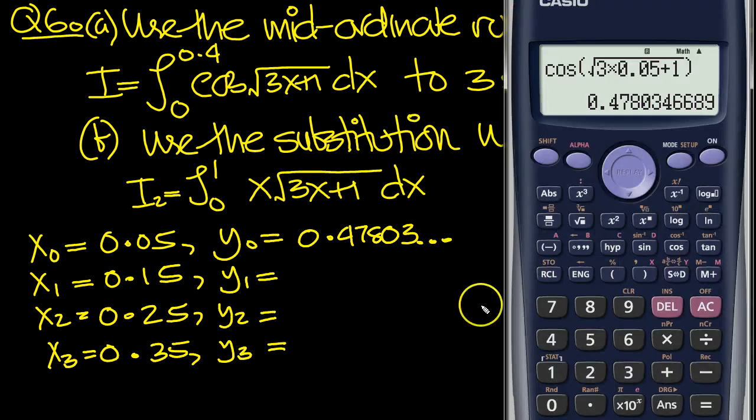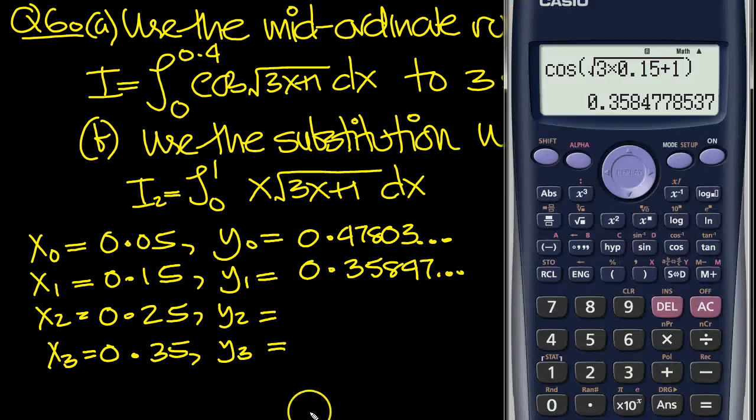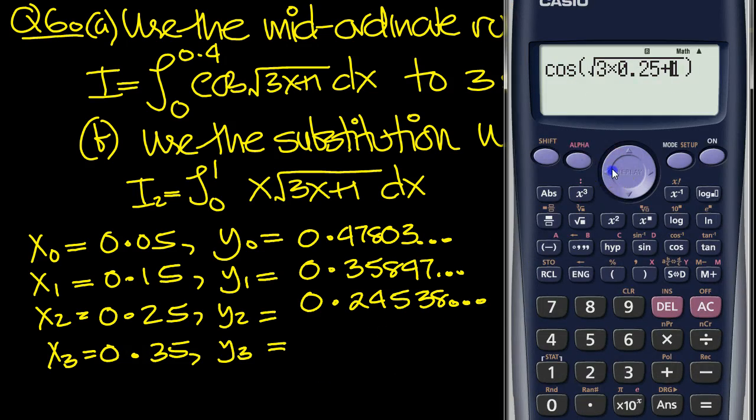Next one is y1. Just tap in and change the 0.05 to 0.15. So we've got 0.35847. Next one is 0.25, so just tap that in. 0.24538. And then the last one is when we do 0.35 input value for x. And we get 0.13856.